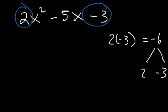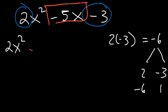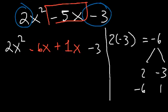It can't be 2 and negative 3, because if you add them you get negative 1. It's going to have to be negative 6 and 1. Negative 6 times 1 is negative 6, and negative 6 plus 1 is negative 5. So we're going to replace the middle term — the negative 5x — with negative 6x plus 1x. Negative 6x plus 1x is negative 5x, so we haven't changed the value of this expression.